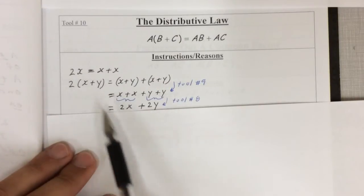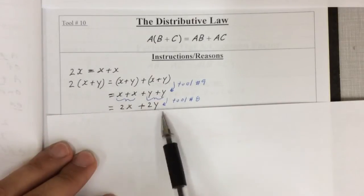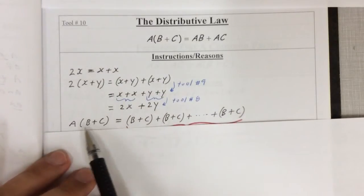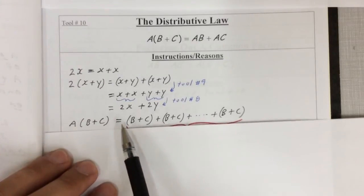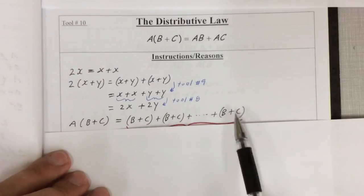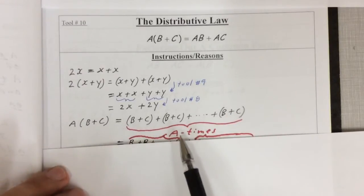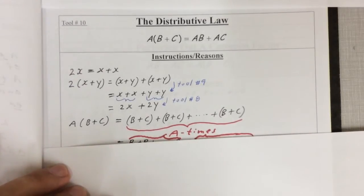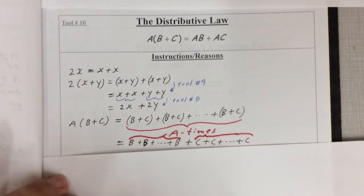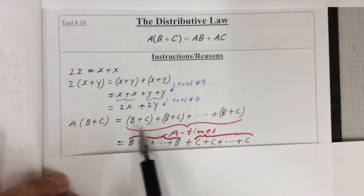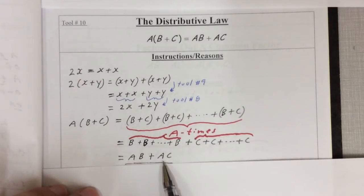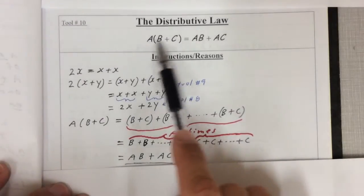So 2(x + y) is 2x plus 2y. If we look at it in terms of a times b plus c — well, a times b plus c is going to be a groups of b plus c. I'm going to write b plus c, a times. When we're adding polynomials, you just remove the brackets and collect them. Collect all the b's to the front, all the c's to the back, and you've got a b's and a c's — so a times b plus a times c. That's why the distributive law works.